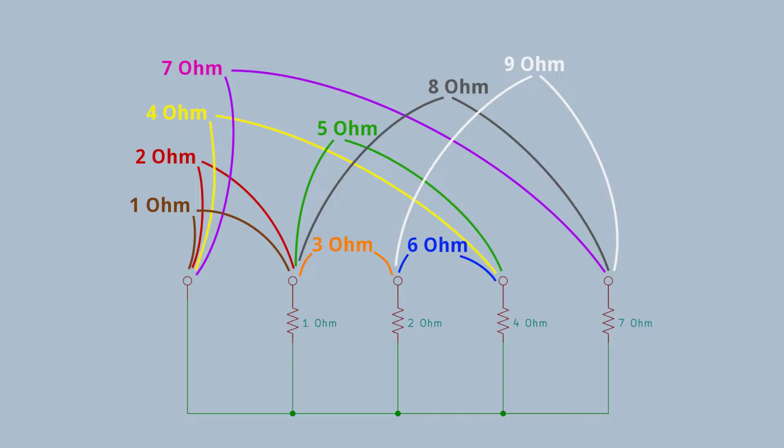And of course, replace those with 10, 20, 40, and 70, and I can do 10 to 90 ohms in 10 ohm increments. Well, that's the first part of the plan.